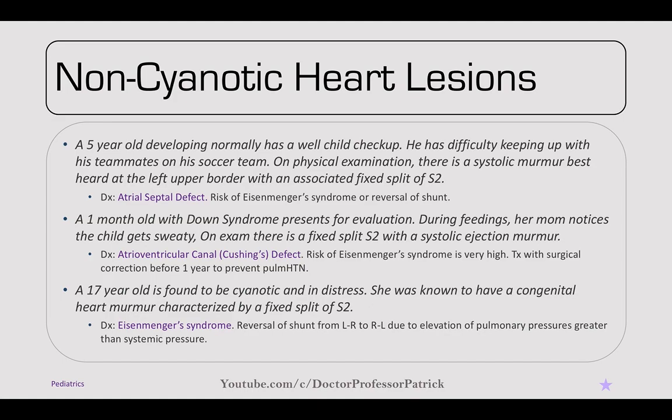A 17-year-old is found cyanotic and in distress, known to have a congenital heart defect. This is Eisenmenger syndrome — the reversal of the shunt from left-to-right to right-to-left, creating a cyanotic shunt, due to elevation of pulmonary pressures above systemic pressures.